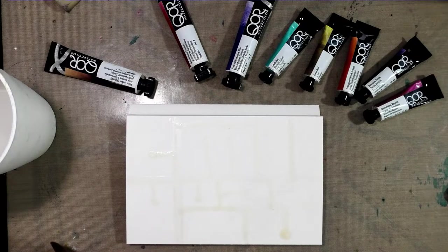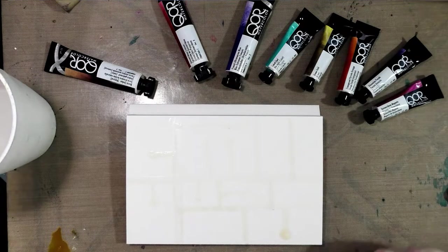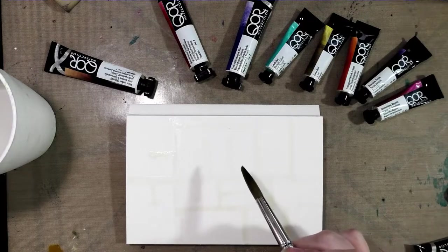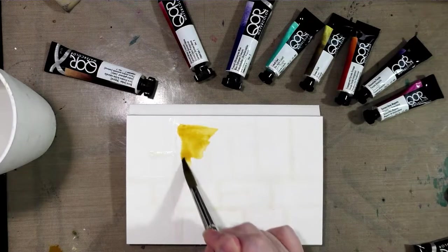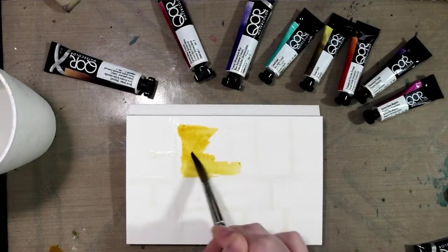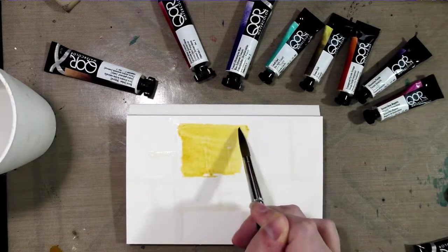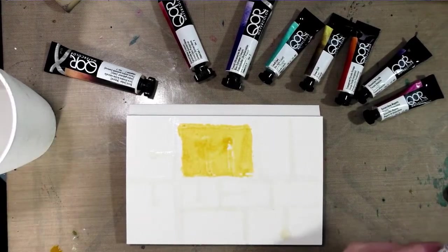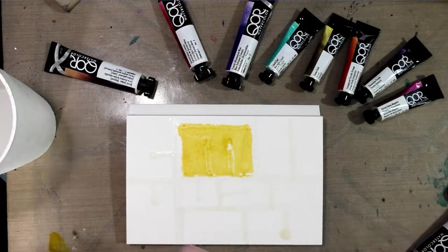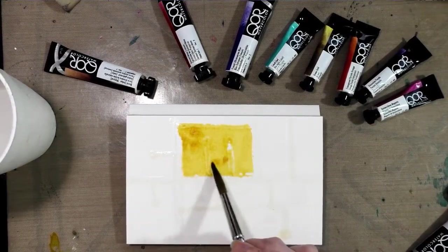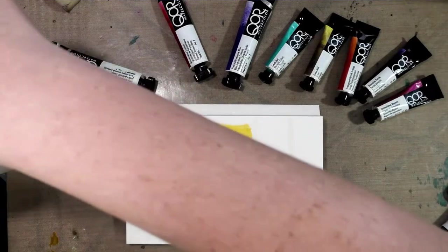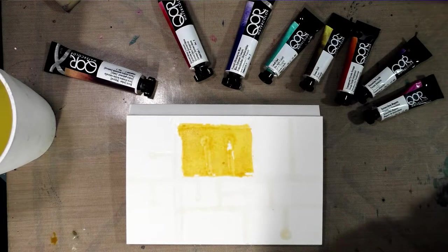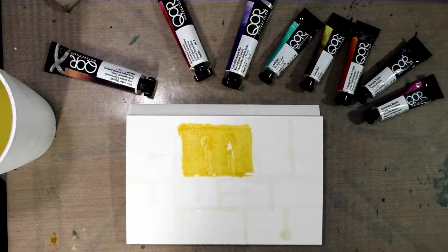So we're going to start with Permanent Gamboge, which is sort of a golden yellow color. And I'm going to just work kind of thick and cheap. And I'll use my craft mat to help facilitate this. So I've got a sample here, and I'm just going to fill in this area here a little bit more with Gamboge Yellow.